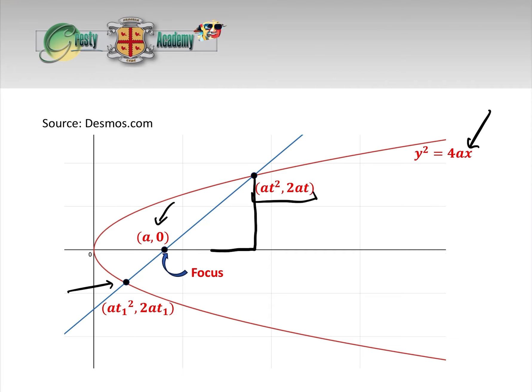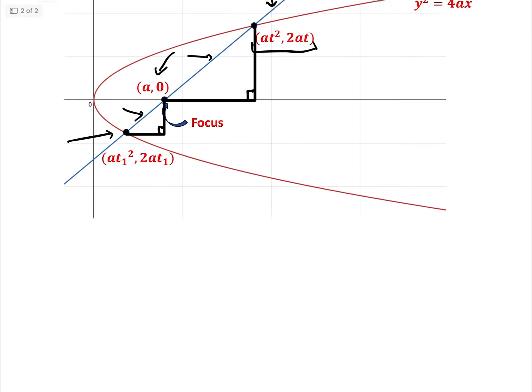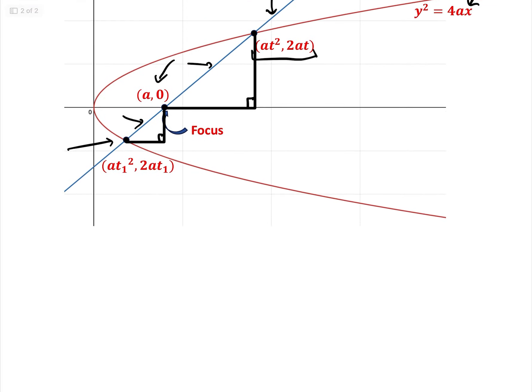What we're going to do over the next minute is try and get an equation involving t and t1. The way we're going to do that is we're going to look at this triangle here first, and then this triangle here as well. We know that this line here and this line here must have the same gradient as this is a focal chord. Therefore, we should be able to get a relationship between t and t1.